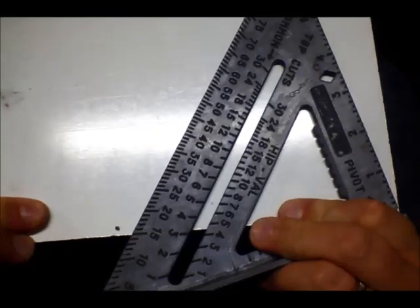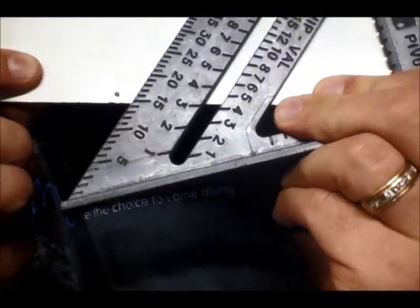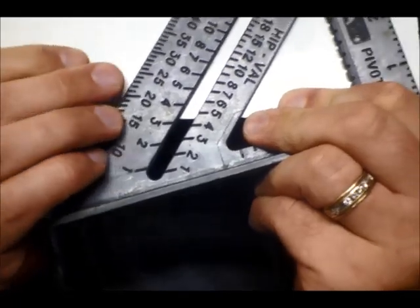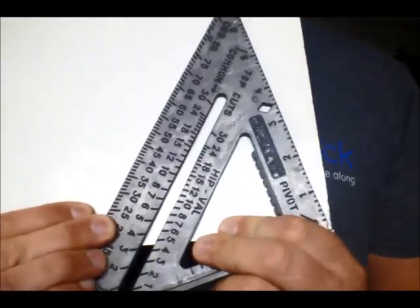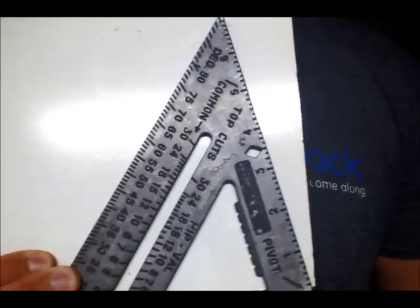Say that you want to do 15, right there. You line up that 15 right there, and then you look over here on the wedge side, and that is your 15 degree angle over here.